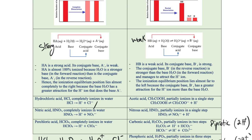Be careful — this ionization happens in three steps because it's a triprotic acid. Since this is a full dissociation for a strong acid, the ionization equilibrium position lies almost completely to the right, with 100% dissociation. The ionization equilibrium position lies almost completely to the right because the base H2O has a greater attraction for the H+ ion donated by the strong acid, forming H3O+ and leaving A- as a conjugate base.